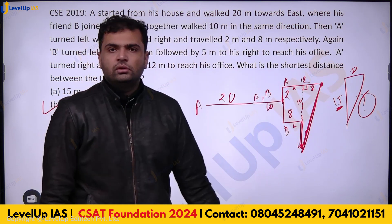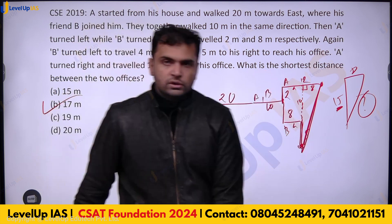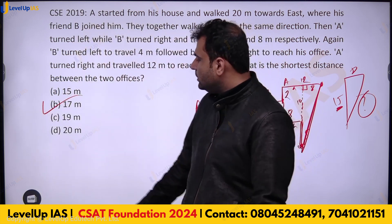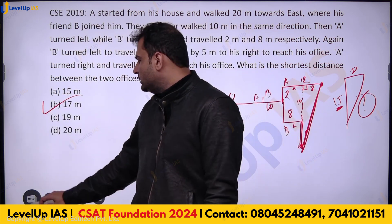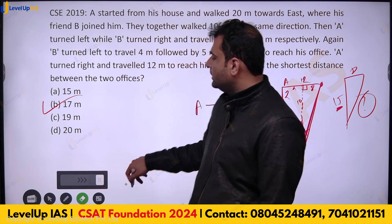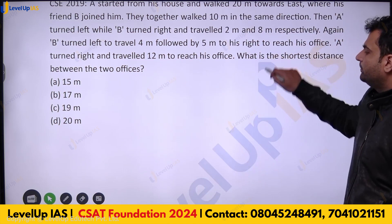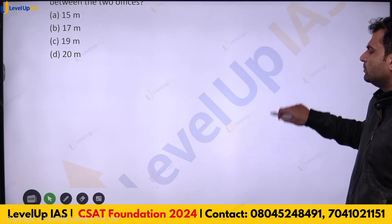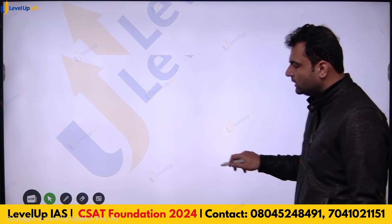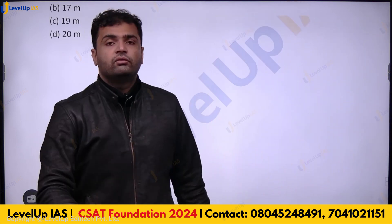Simply complete the diagram and use Pythagoras theorem and geometry to figure out the shortest distance. This is one of the simpler topics in CSAT. This was the last question for today.